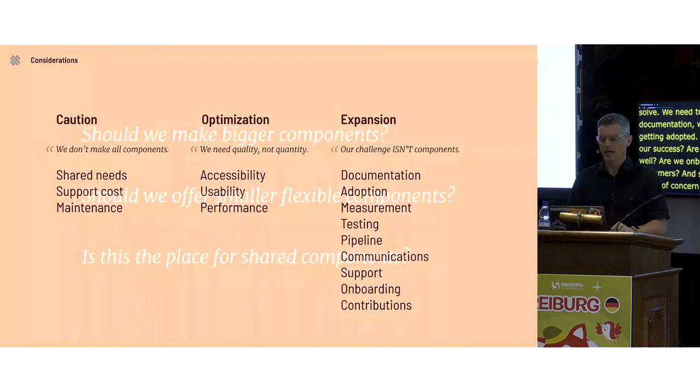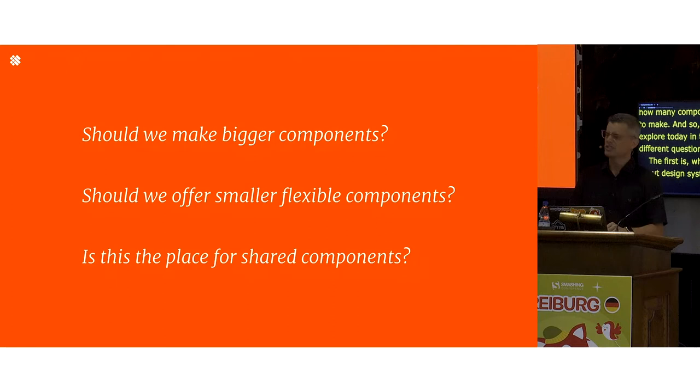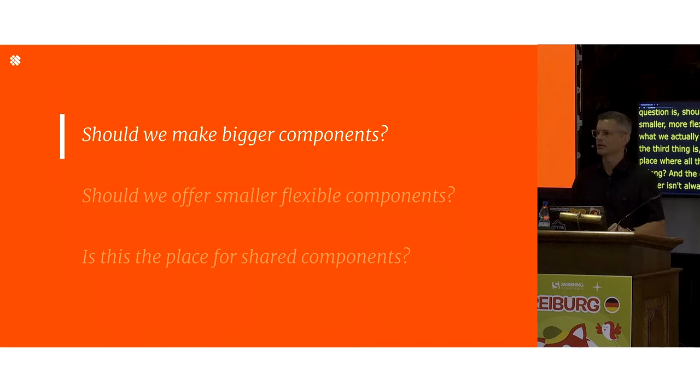So today I want to explore three questions. First: when thinking about design systems, should they make bigger components? Second: should we offer smaller, more flexible things than what we already have? Third: is our design system the place where all shared things belong? The answer isn't always yes or no.